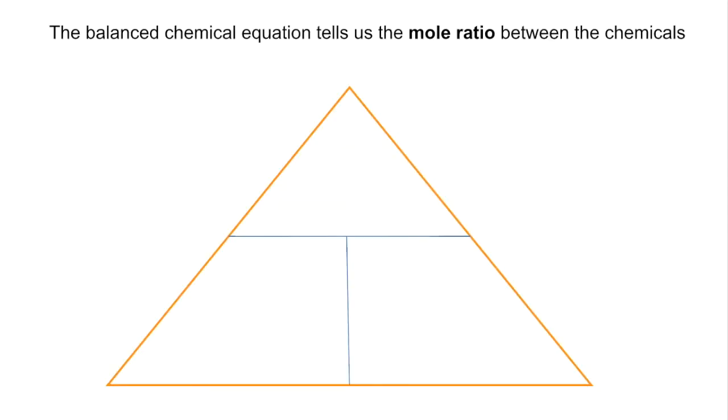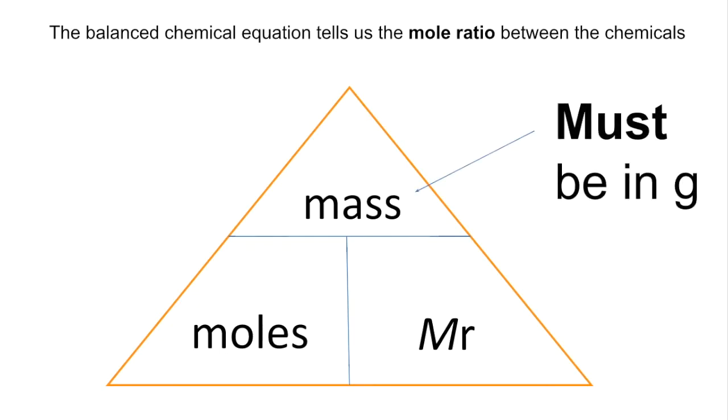Essentially what a balanced chemical equation is telling us is the mole ratio between the chemicals involved. So we're going to have to turn those masses into moles using the mass moles MR formula triangle. Just remember that mass must be in grams, so beware masses that are given in units other than grams such as kilograms.